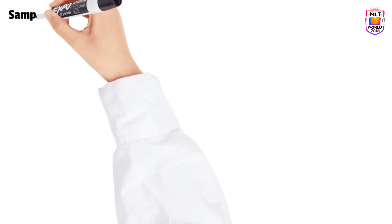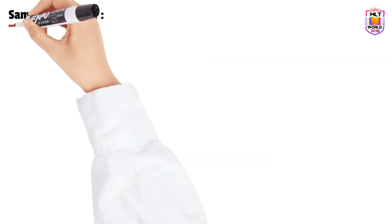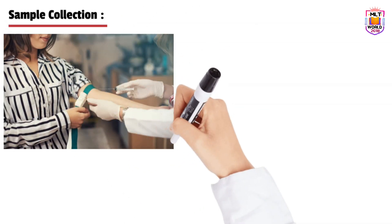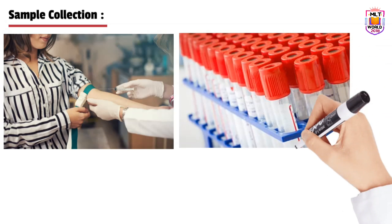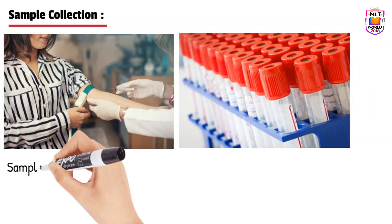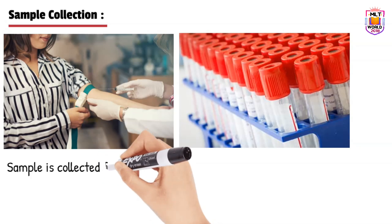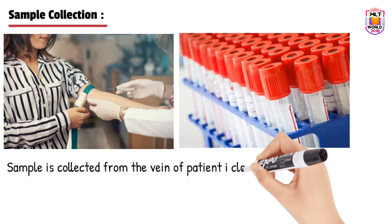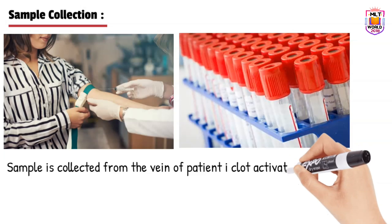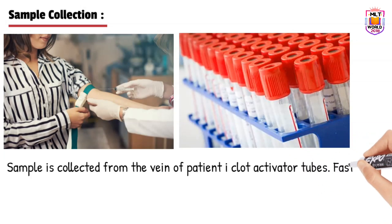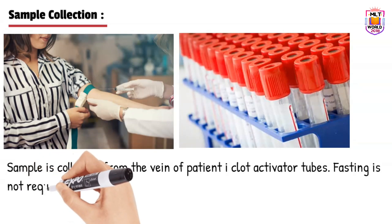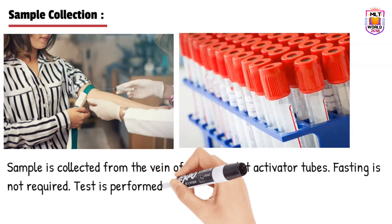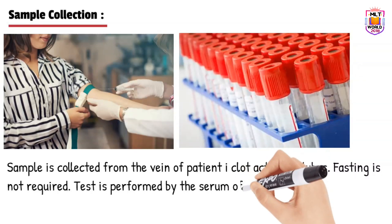To perform this test, a blood sample is required. The ALP test is done by blood test, and blood is collected from the vein of the patient. There is no rule that fasting is required — the patient can give a sample at any time. Blood is collected in a clot activator red or yellow tube, because serum is required. When the sample reaches the lab, they will centrifuge it and the test is performed using the serum.